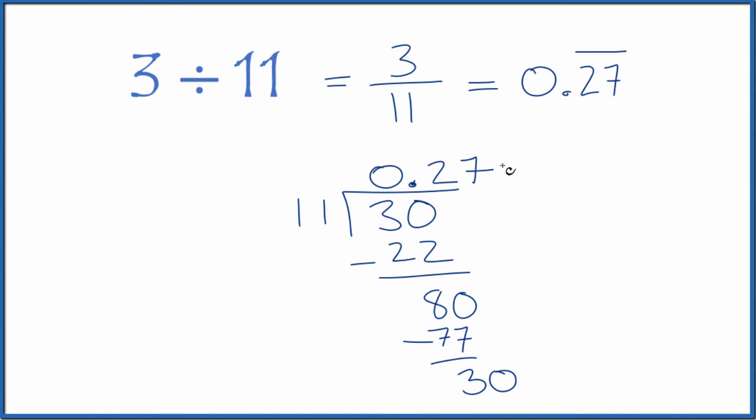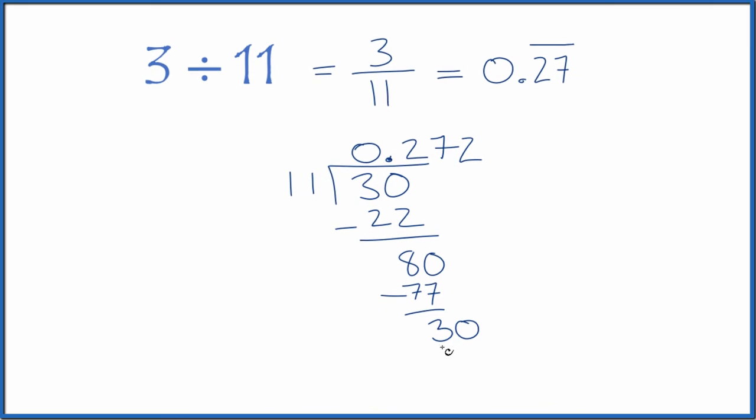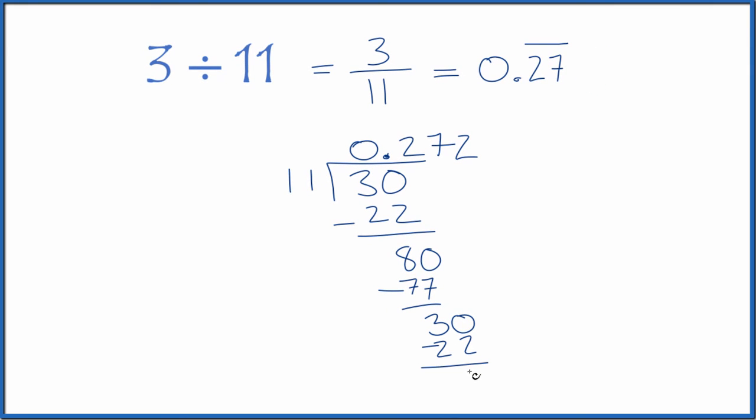We call it 30. So we'll multiply 2 times 11, that's 22. We subtract, we get 8, call it 80. And then 7 times 11, that's 77. And you can see it just keeps repeating. These two sevens keep repeating. So that's why we call it 0.27 with a bar over it.